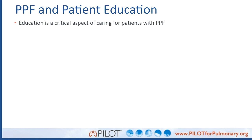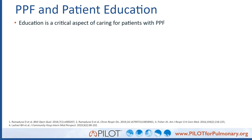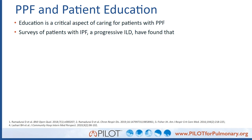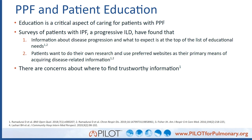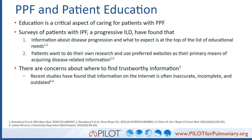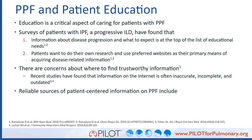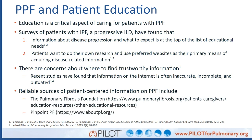The importance of education cannot be overstated. For patients dealing with interstitial lung disease, not understanding their disease can be an extremely anxiety-provoking process. Patients often have tremendous anxiety and fear regarding prognosis and outcomes, much of it driven by not knowing enough about their disease. There is a lot of outdated, inaccurate, and incomplete information on the internet — patients often tell us they Googled their disease and found they only have six months to live, which is often not the case. Reliable sources include the Pulmonary Fibrosis Foundation and Pinpoint PF.